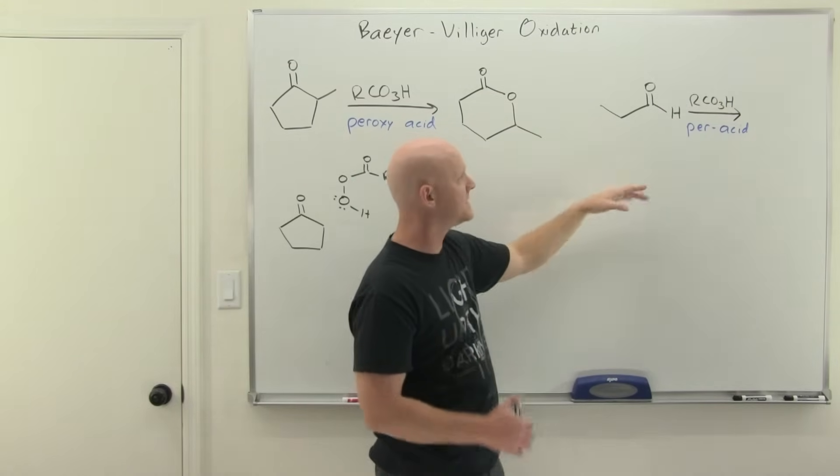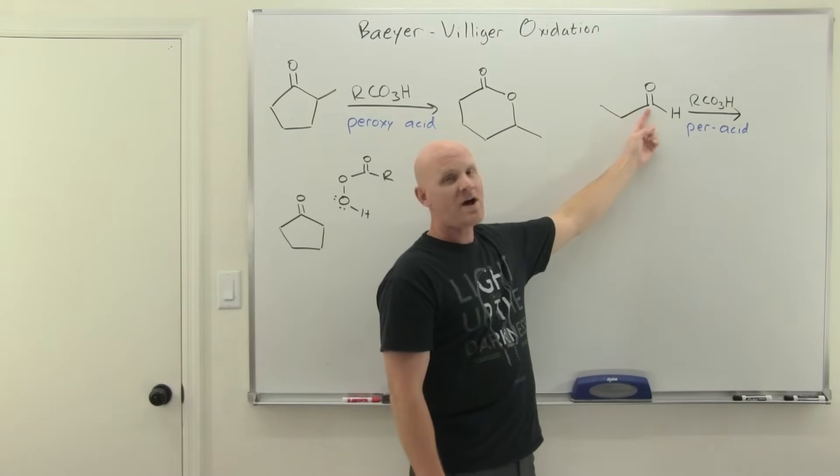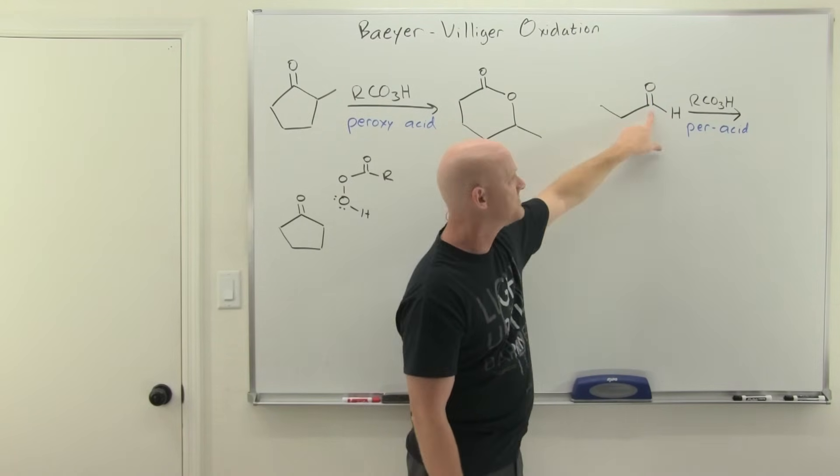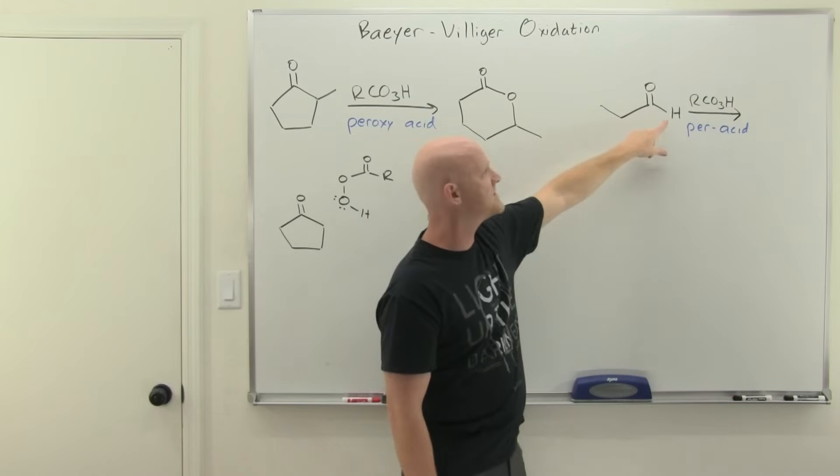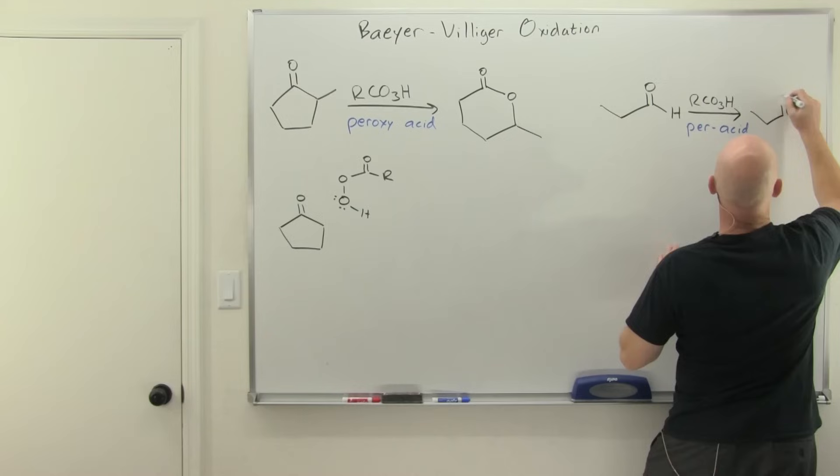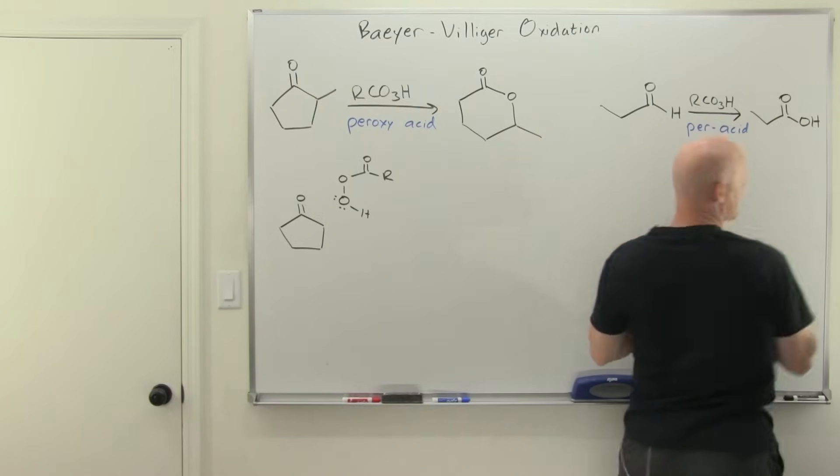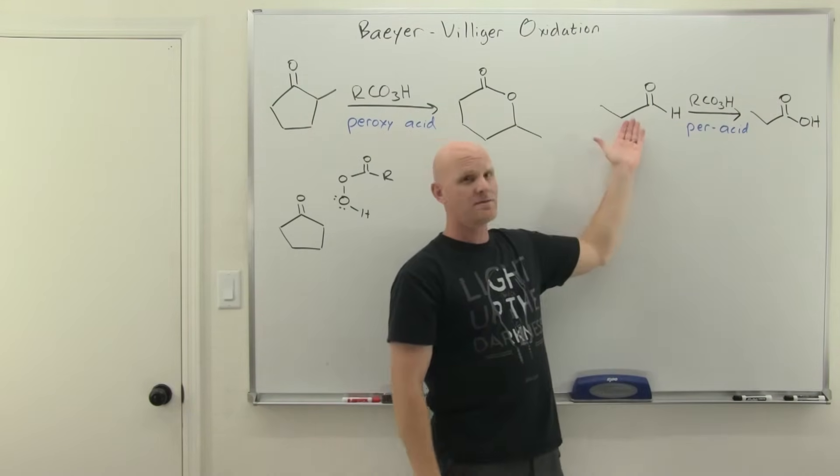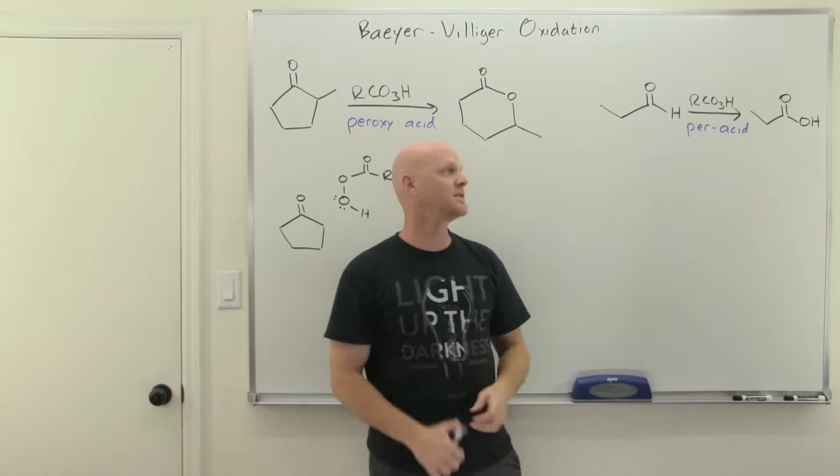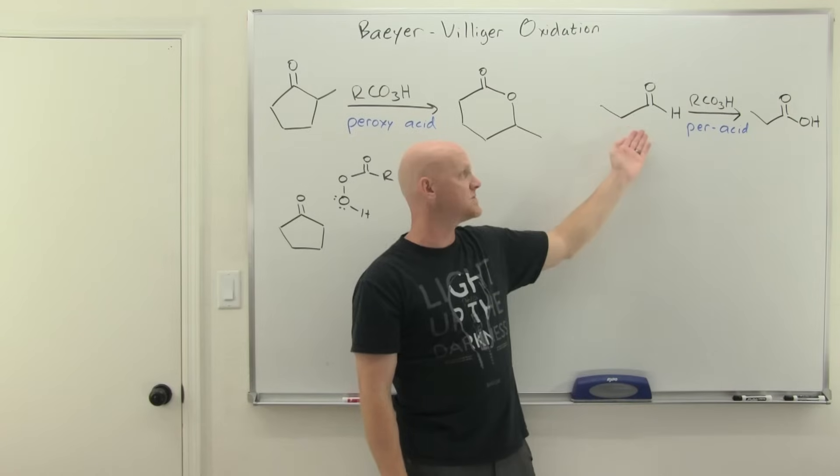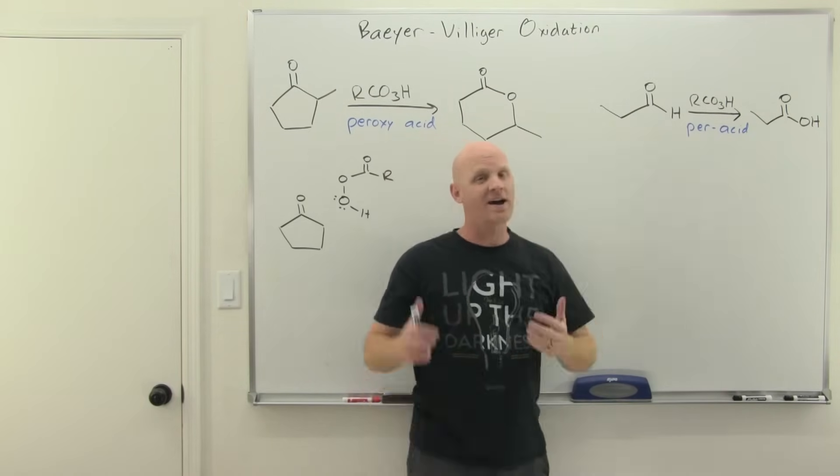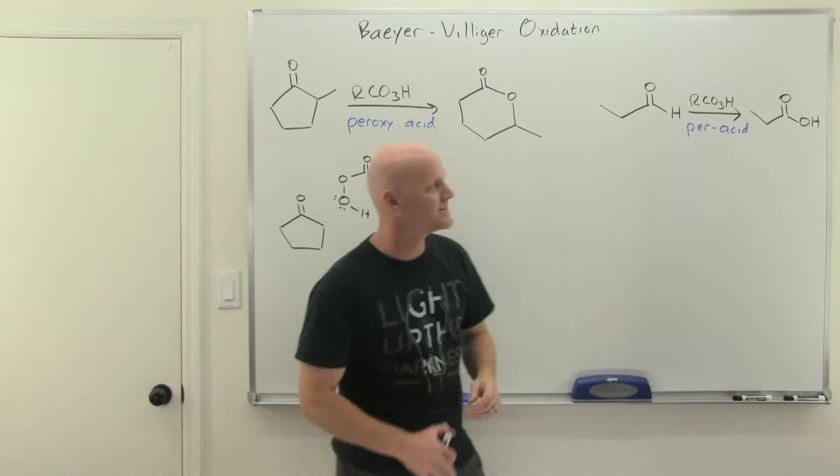With an aldehyde, the carbonyl will always substitute on the hydrogen side, not next to the carbon, forming a carboxylic acid. You might recall we already know how to convert aldehydes to carboxylic acids using chromic acid, so many people don't even discuss aldehydes when covering Bayer-Villiger oxidation. However, this is what it would accomplish with an aldehyde, and this is a chapter on aldehydes and ketones.